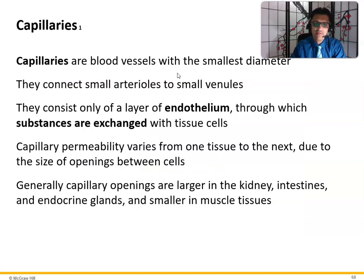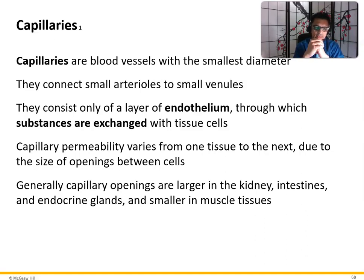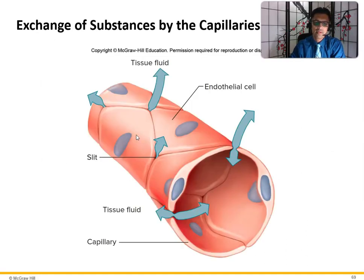Capillaries are the blood vessels with the smallest diameter. They connect small arterioles to small venules and consist only of a layer of endothelium through which substances are exchanged. Capillaries are very thin so that oxygen, carbon dioxide, nutrition, and waste products can easily move in and out. Capillary permeability varies from one tissue to the next due to the size of the openings between cells — generally larger in the kidneys, intestines, and endocrine glands, and smaller in muscle tissues.